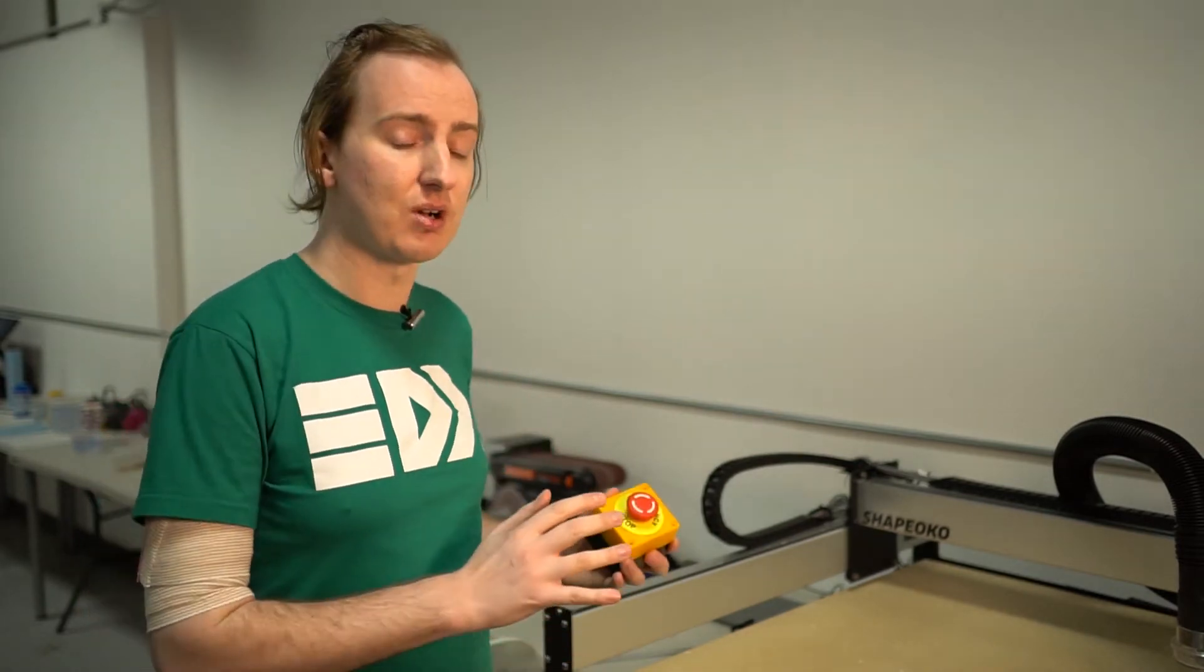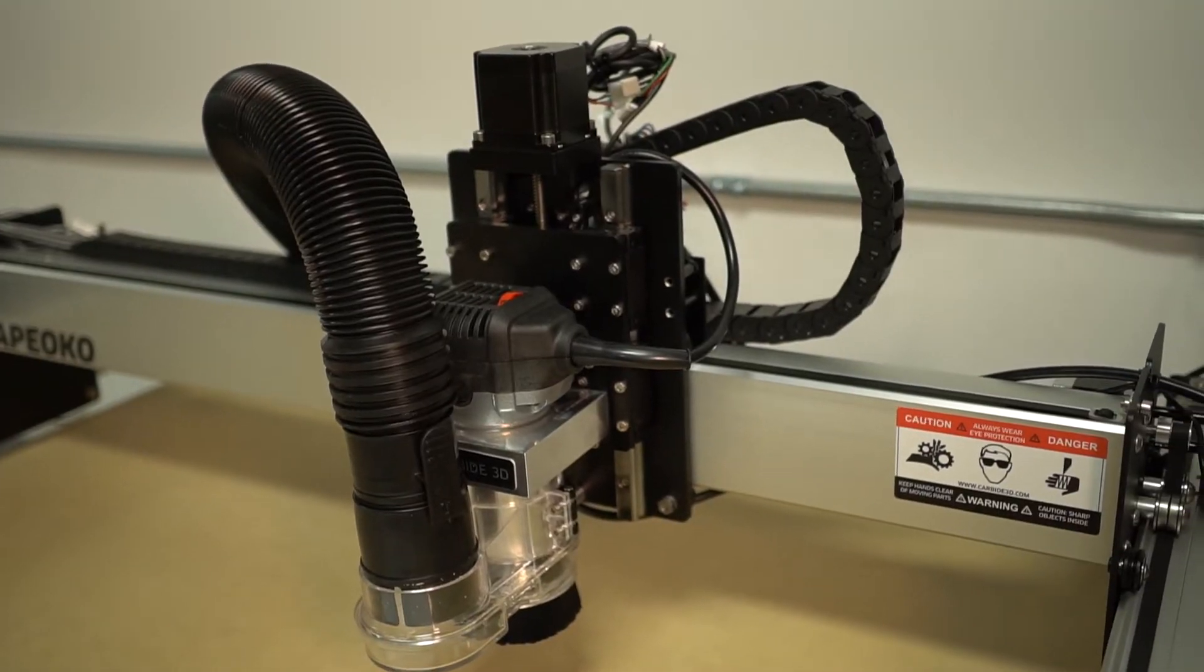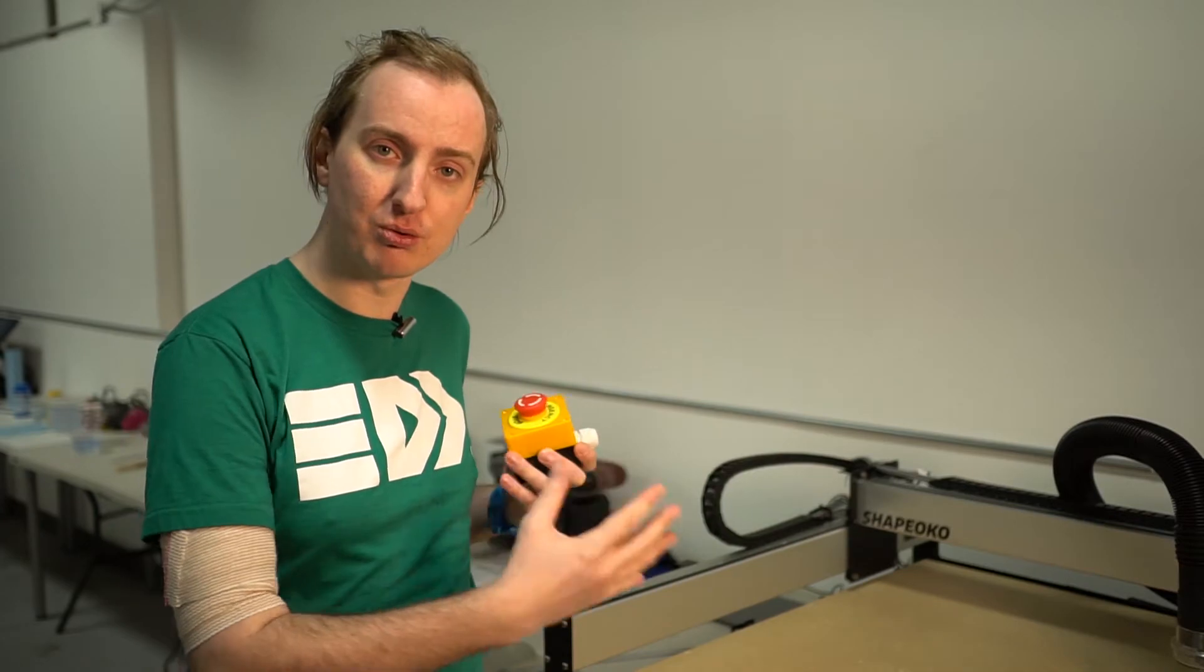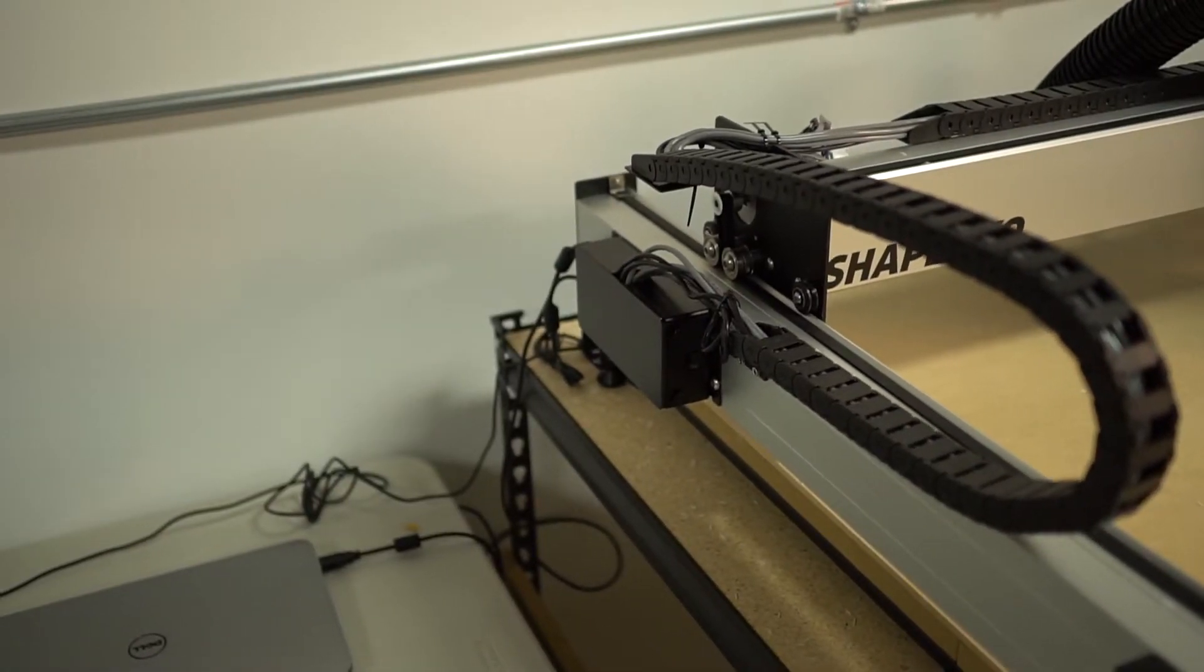Now, the Shapeoko does not come with an e-stop button, and there's a couple of reasons for that. First of all, it has two separate power cables. The router, that actually spins the spindle and spins the milling bit, has one power cable, and then the movement controller, which controls the three axes and moves the actual spindle around, has a different power cable and is separate.